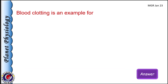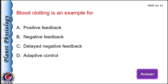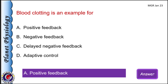Blood clotting is an example of: A) positive feedback, B) negative feedback, C) delayed negative feedback, and D) adaptive control. The correct answer is positive feedback mechanism. Other examples of positive feedback include parturition, LH surge, and generation of action potential.